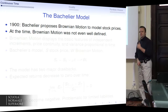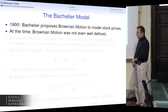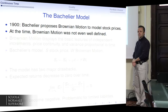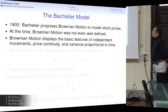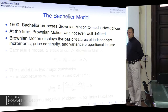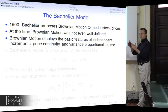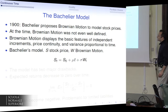Bachelier was thinking about the prices of stocks and bonds in the Paris Bourse, and at the time he was really walking on thin ice because Brownian motion was not even well defined, and yet he had the intuition to work with it without having a well-defined mathematical concept. The main idea of Bachelier was that stock prices have independent increments, one of the defining features of Brownian motion, and that the variance of price increments is typically proportional to time.